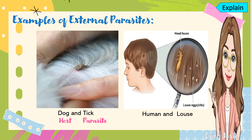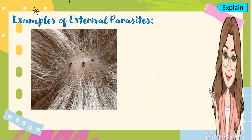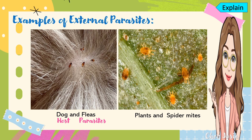Another example, we have the human and the louse: the louse lives in the human's head or on the hair of the human. The human is the host and the parasite is the louse, wherein they also draw blood from the host. Another example, we have dog and fleas: the dog is the host and the fleas are the parasites. Another example, we have plants and spider mites: the spider mites are the parasites and the plant is the host.